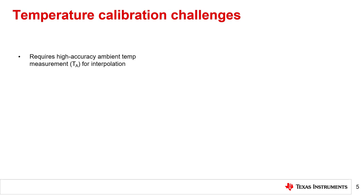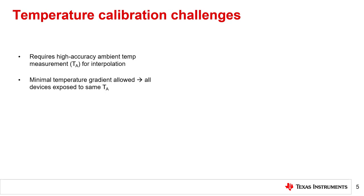One important challenge with this temperature calibration process is that the ambient temperature must be known to use the linearization equations introduced on the previous slide. This requires some method to accurately determine the system temperature, such as a discrete temperature sensor. This can increase the cost, power consumption, and complexity of the system. A second challenge involves ensuring that the entire system is subjected to the same temperature. In some cases, specific components can dissipate more power than others, causing temperature gradients across the PCB. As a result, different parts of the board can be at different temperatures, which can impact the accuracy of the calculated ADC code range.